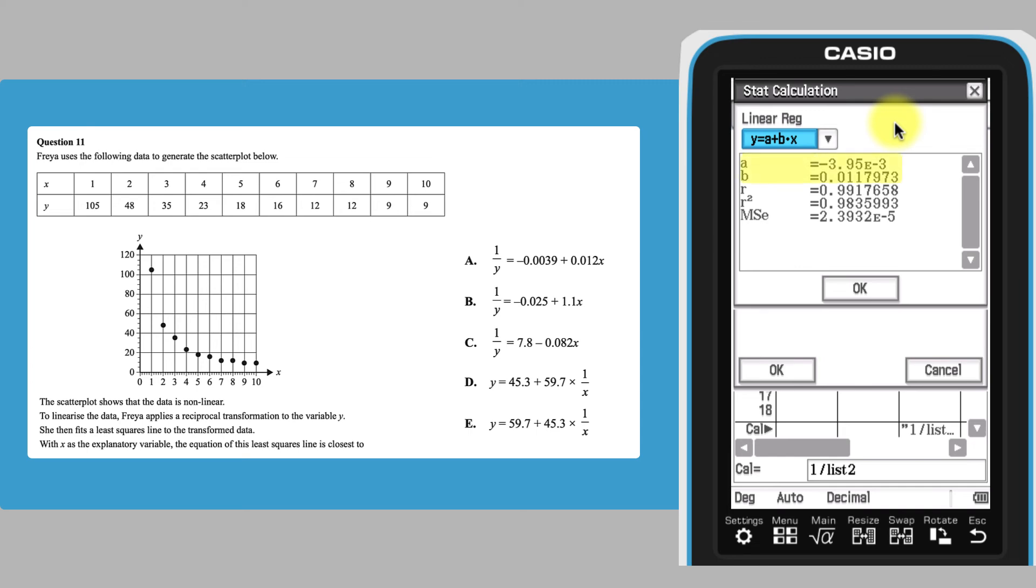By comparing the values of a and b to the possible answers, and remembering that a reciprocal transformation has been performed on the variable y, we can see that the answer to this question is option a.